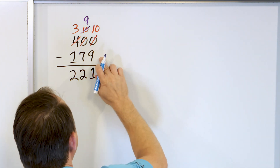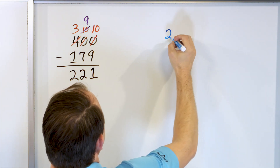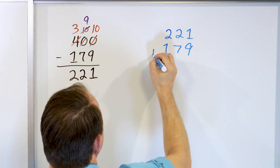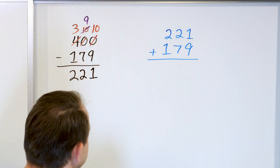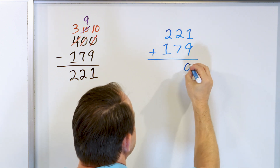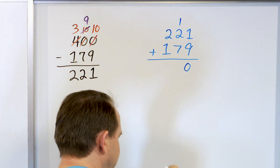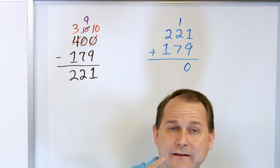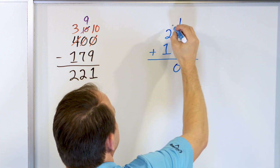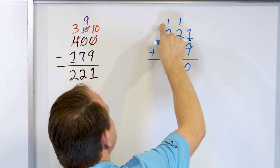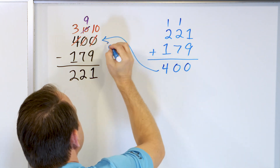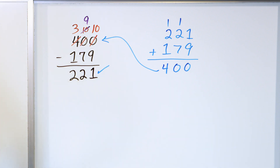We're going to check it — we subtracted to get 221, so we'll start at 221 and add this number back in: 179. 9 plus 1 is 10, so we put a 0 there and carry the 1. 7 plus 2 is 9, plus 1 more is also 10. So the 0 goes here and we carry the 1. Then 2 plus 1 is 3, plus 1 is 4. We got an answer of 400, which matches, so we know we did our subtraction correctly.